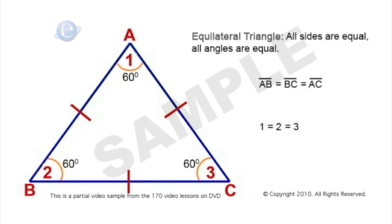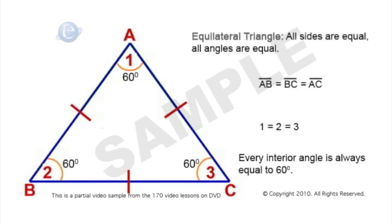So for an equilateral triangle, every interior angle is always equal to 60 degrees.